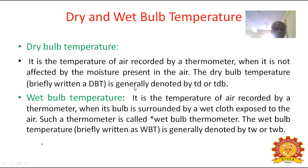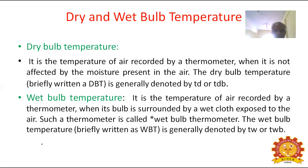Wet bulb temperature is the temperature of air recorded by a thermometer when its bulb is surrounded by a wet cloth, exposed to the air. Such a thermometer is called wet bulb thermometer. The wet bulb temperature is written as WBT, and is generally denoted by T suffix W or T suffix WB.